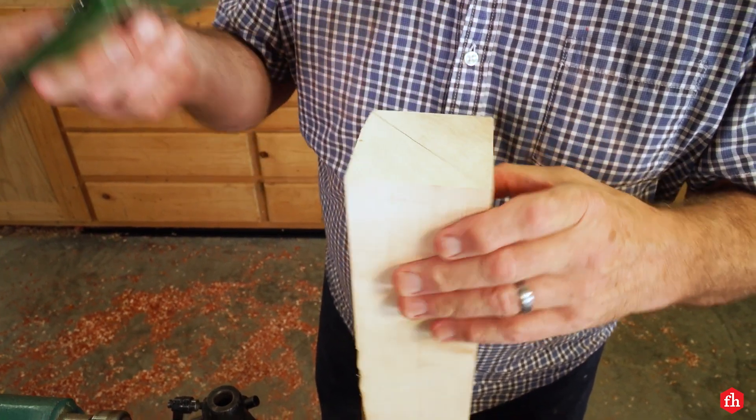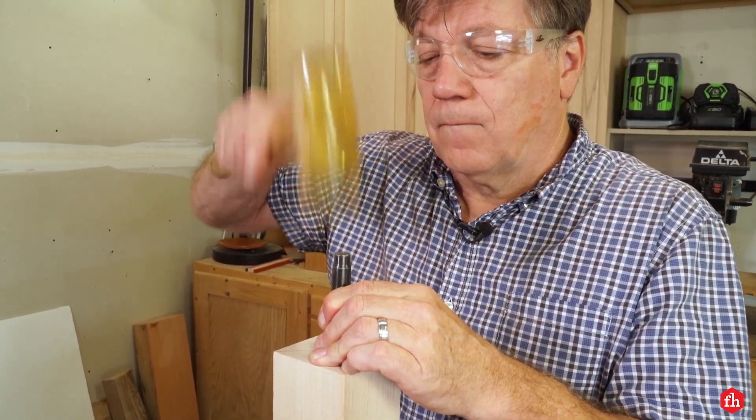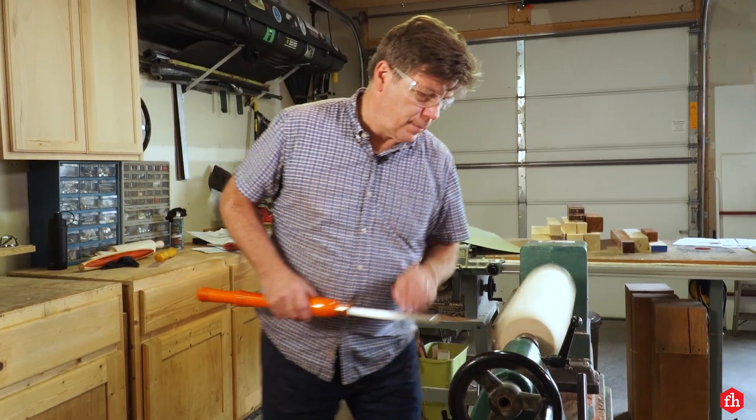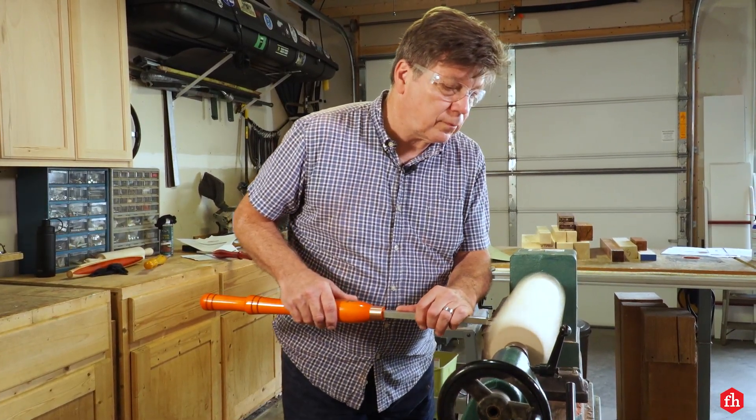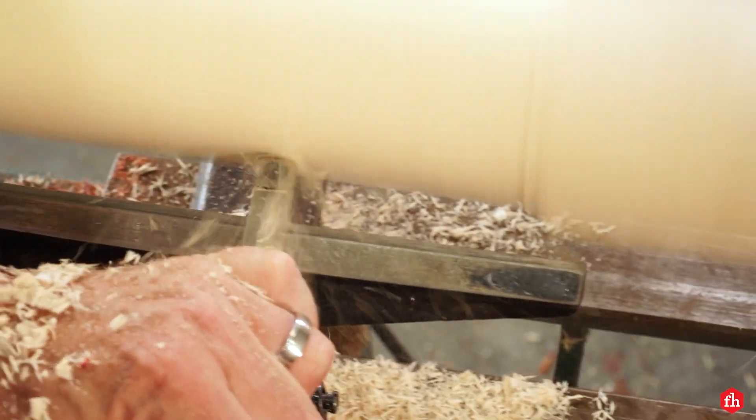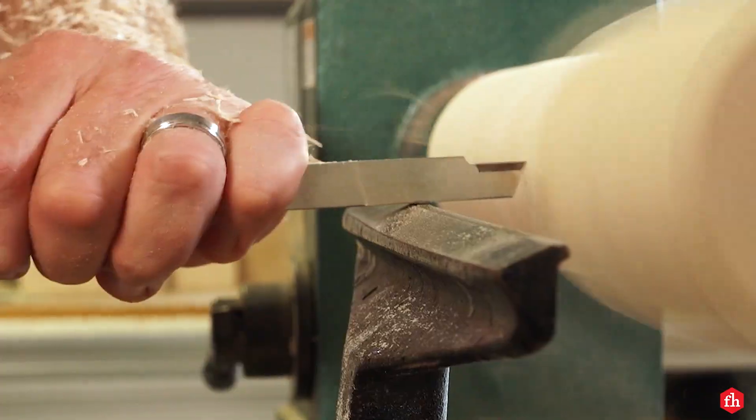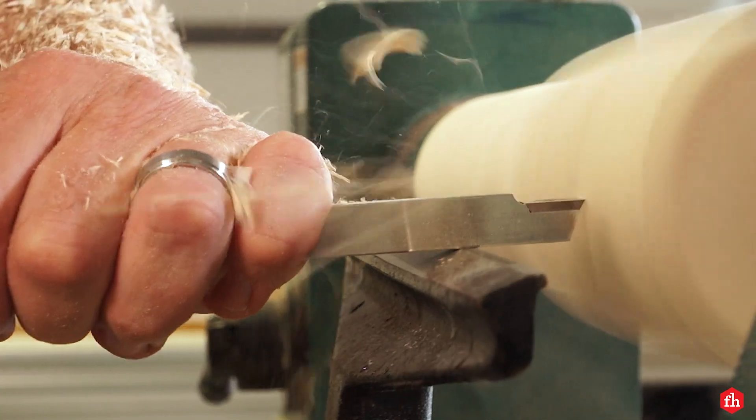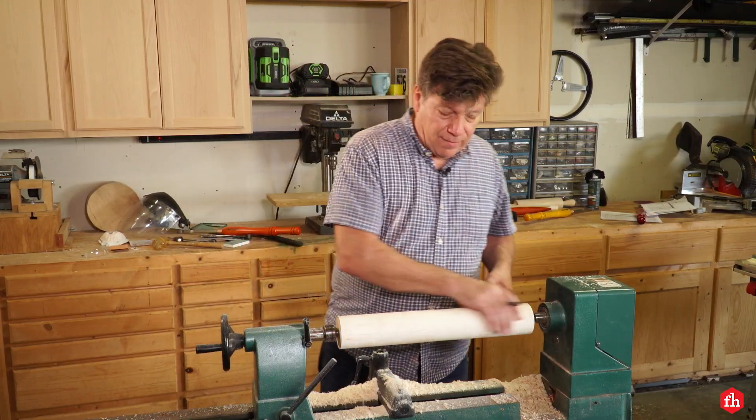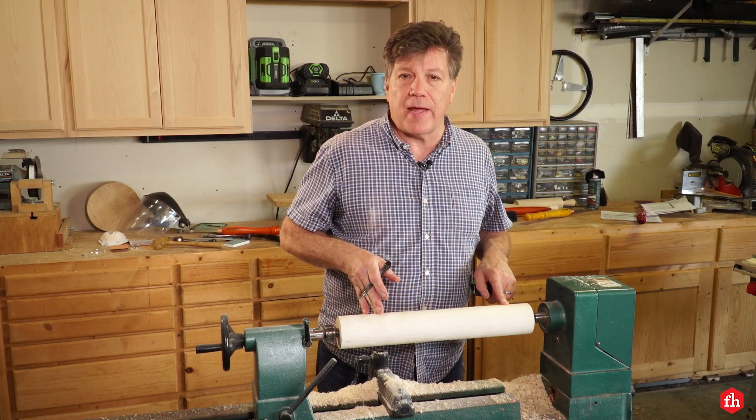Just like before, I find the center on both ends of the turning blank. Then I attach this boot chuck and mount it to the lathe, then proceed to turn it into a cylinder. All right, now that we have this roughed down to a cylinder and sanded, it's time to lay out for the handles.